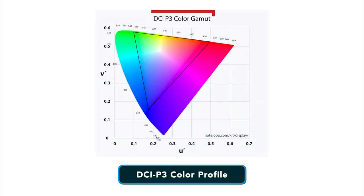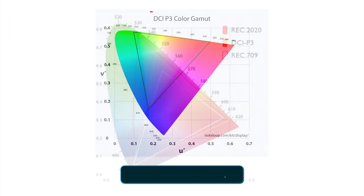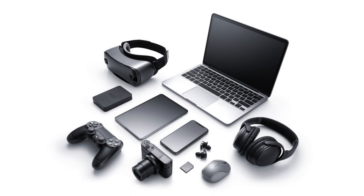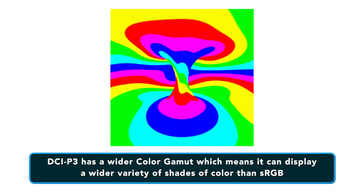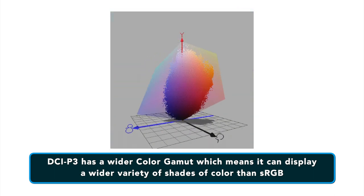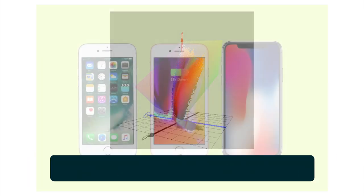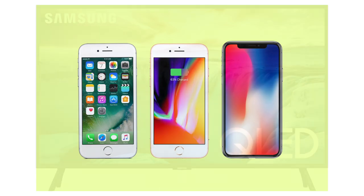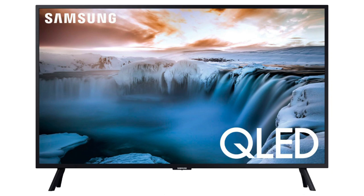There's also the DCI-P3 color profile. DCI-P3 has been used for decades by the film industry and is starting to crop up in consumer products as well. It has a wider color gamut, meaning it can display a wider variety of shades of color than sRGB. The iPhone 7 and above all have a screen that can support the DCI-P3 color gamut, and it's also the profile used by a lot of HDR 4K TVs.